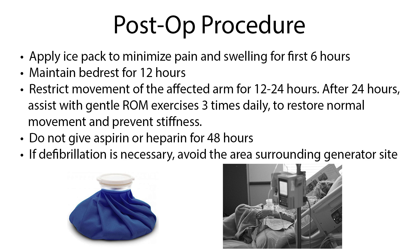Apply an ice pack to minimize pain and swelling for the first 6 hours. Maintain bed rest for 12 hours. Restrict movement of the affected arm for 12 to 24 hours. After 24 hours, assist with gentle range of motion exercises 3 times daily to restore normal movement and prevent stiffness. Do not give aspirin or heparin for 48 hours. If defibrillation is necessary, avoid the area surrounding the generator site.